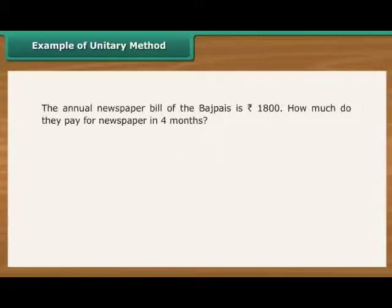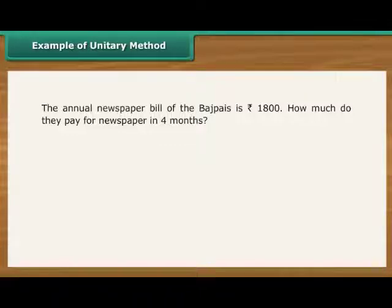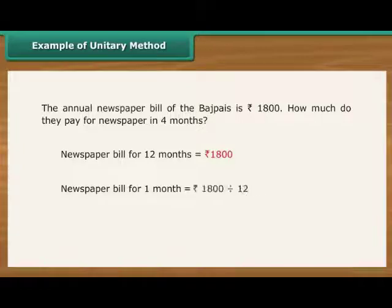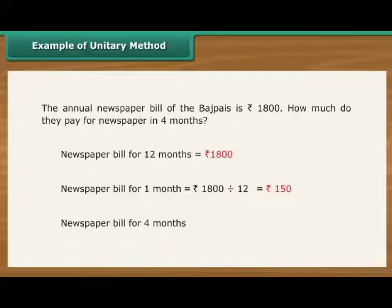Example of unitary method. The annual newspaper bill of a family is Rs. 1800. How much do they pay for newspapers in 4 months? Newspaper bill for 12 months is Rs. 1800. Newspaper bill for 1 month is Rs. 1800 divided by 12, that is Rs. 150. Newspaper bill for 4 months is Rs. 150 multiplied by 4, which equals Rs. 600.